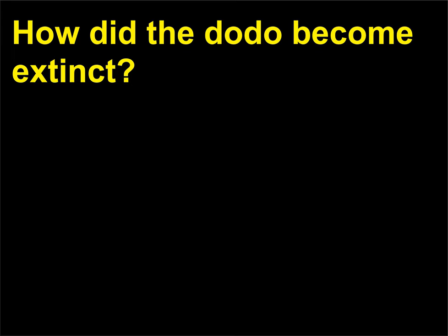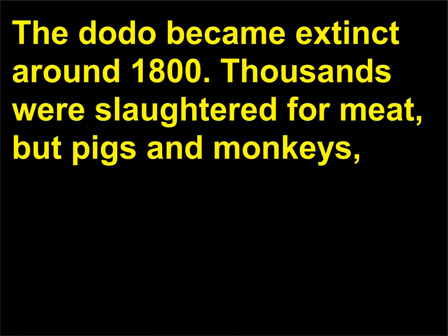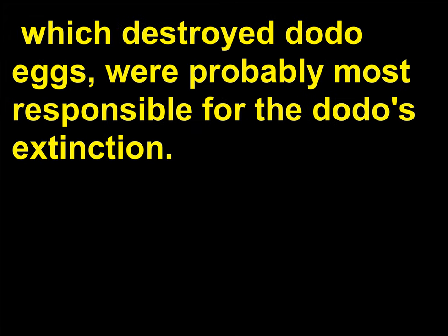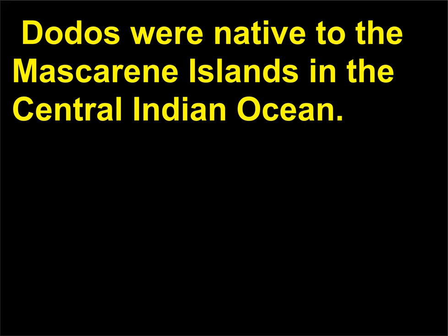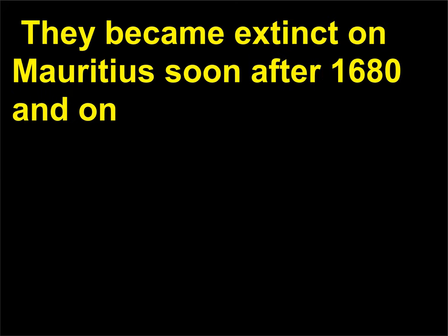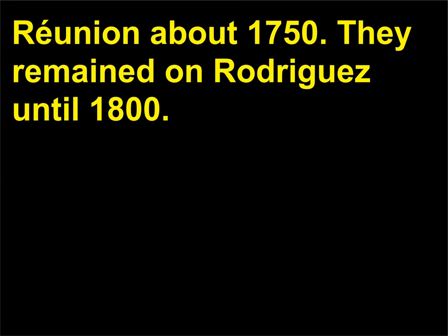How did the dodo become extinct? The dodo became extinct around 1800. Thousands were slaughtered for meat, but pigs and monkeys, which destroyed dodo eggs, were probably most responsible for the dodo's extinction. Dodos were native to the Mascarene Islands in the central Indian Ocean. They became extinct on Mauritius soon after 1680 and on Réunion about 1750, and remained on Rodrigues until 1800.